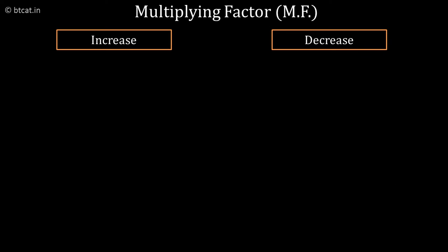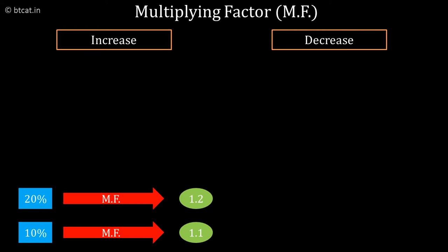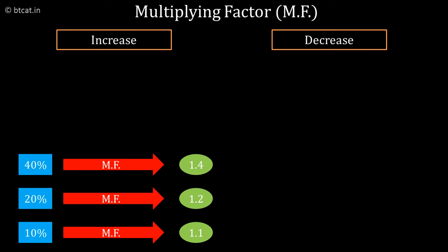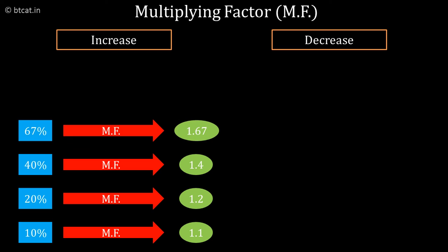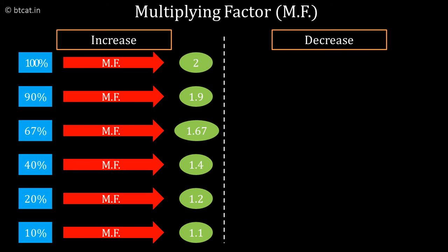This 1.1 corresponds to the multiplying factor of 10%. If the percentage increase had been 20%, the multiplying factor would have been 1.2. Had it been 40%, the multiplying factor would have been 1.4. For 67%, it is 1.67. For 90%, it is 1.9. And for 100%, it is 2.